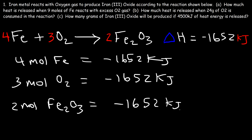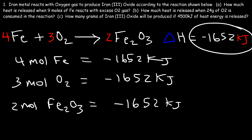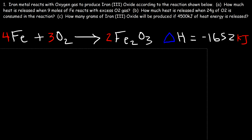You need to understand the relationship between this amount of thermal energy and the moles of the reactants and products. Now let's focus on this problem: iron metal reacts with oxygen gas to produce iron(III) oxide, according to the reaction shown below.